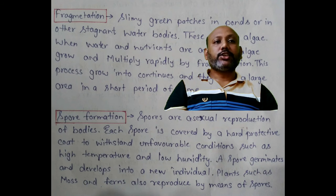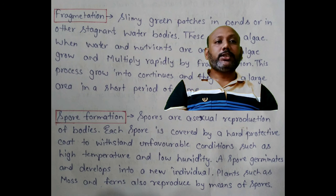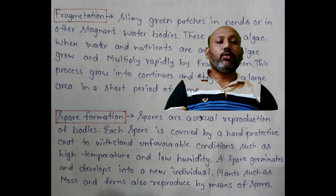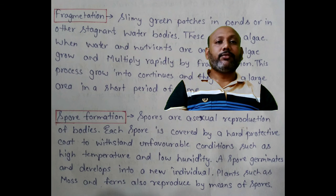Spores are the asexual reproductive bodies. Each spore is covered by a hard protective coat to withstand unfavorable conditions such as high temperature and low humidity. A spore germinates and develops into a new individual. Plants such as moss and ferns also reproduce by spore formation.